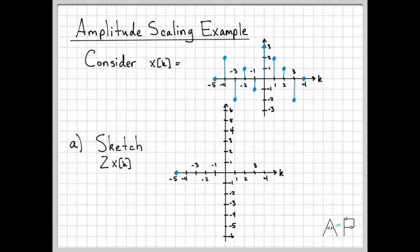2 times 0 is still 0. At time minus 4, originally I had a value of 2. 2 times 2 is 4, so I plot a 4. And then we just continue doing that for all the values. A negative 2 times 2 is minus 4. 1 times 2 is 2. A negative 1 times 2 is negative 2.